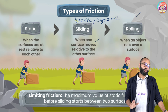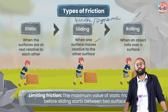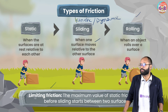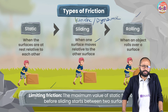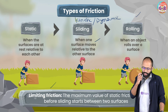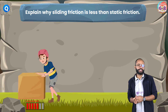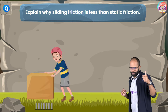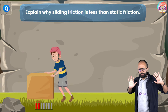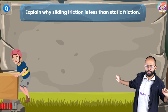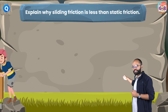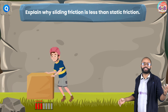Rolling friction occurs when an object rolls over a surface. Limiting friction is the maximum value of static friction just before sliding starts between two surfaces. Notice in this animation: the kid applies force on the block, pushes and pushes, but the block eventually starts to move. The friction force — shown as red bars — reaches a maximum static value and then decreases to the lower sliding friction value when the block starts to slide.